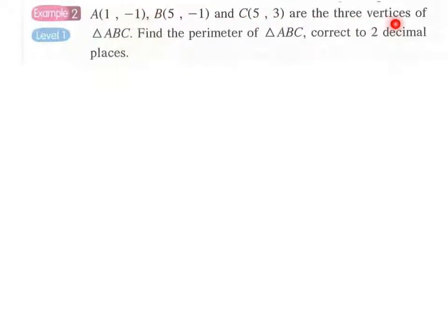A(1,-1), B(5,-1), and C(5,3) are the three vertices of triangle ABC. Find the perimeter of triangle ABC correct to two decimal places.